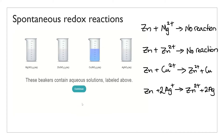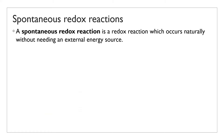A spontaneous redox reaction is a redox reaction which occurs naturally, without needing an external energy source. For the scope of VC chemistry, you can think of a spontaneous redox reaction as a reaction that will happen if you mix two reactants together. A non-spontaneous reaction is one that only happens if you supply electricity — that's the external energy source that has to be supplied.